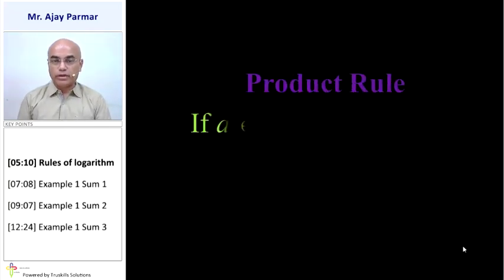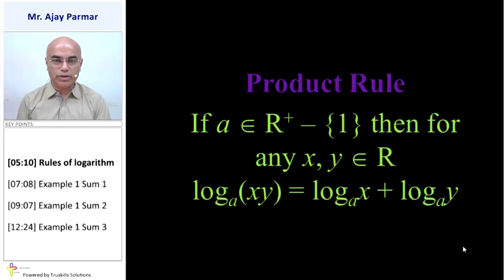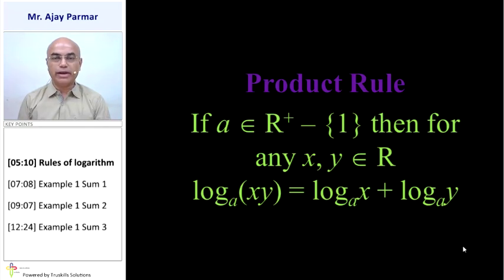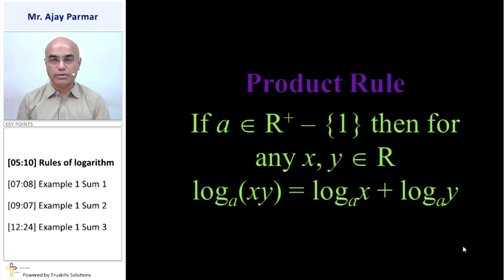Product rule: If a belongs to R-plus minus 1 and x, y belong to R, and there is a multiplication sign between numbers x and y, then log xy to the base a equals log x to the base a plus log y to the base a. That means if there is a multiplication sign between the numbers, there will be an addition sign between their logs.